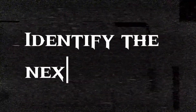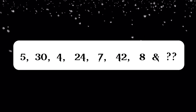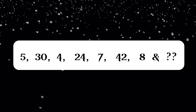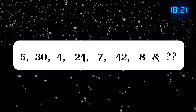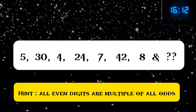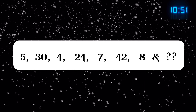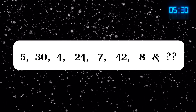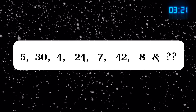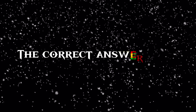Level two: identify the next number. 5, 30 — 4, 24 — 7, 42 — 8, ? Your time starts now. Hint: all even digits are multiples of all odds. Hurry up, time is running out. Three, two, one — the correct answer is 48.